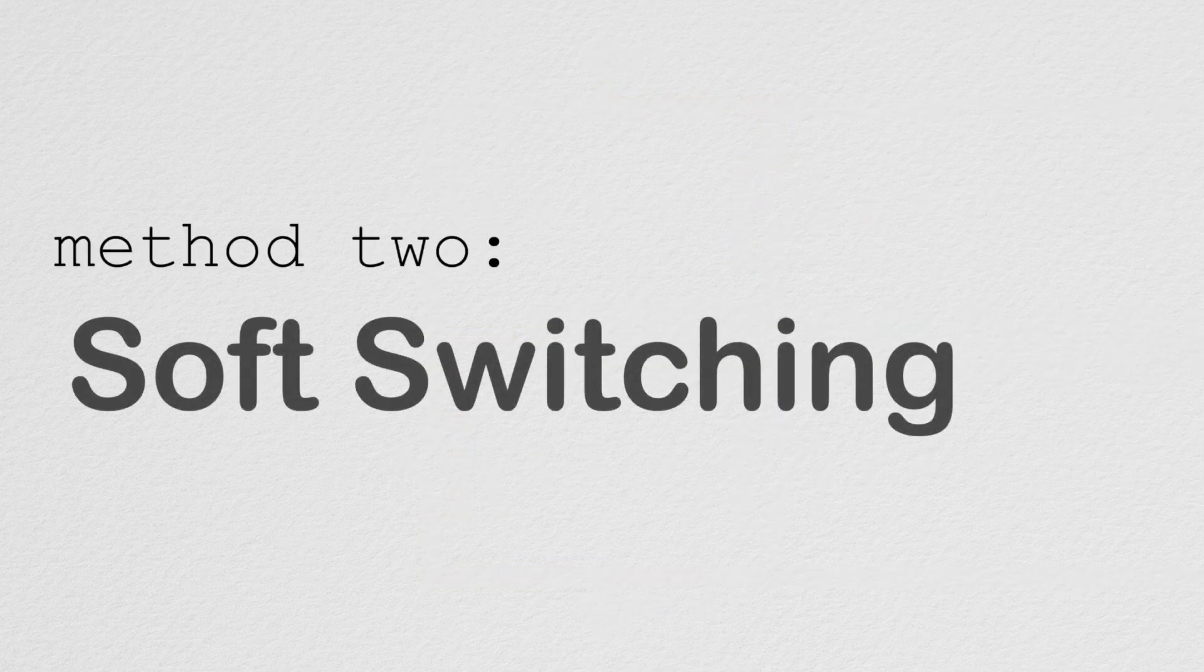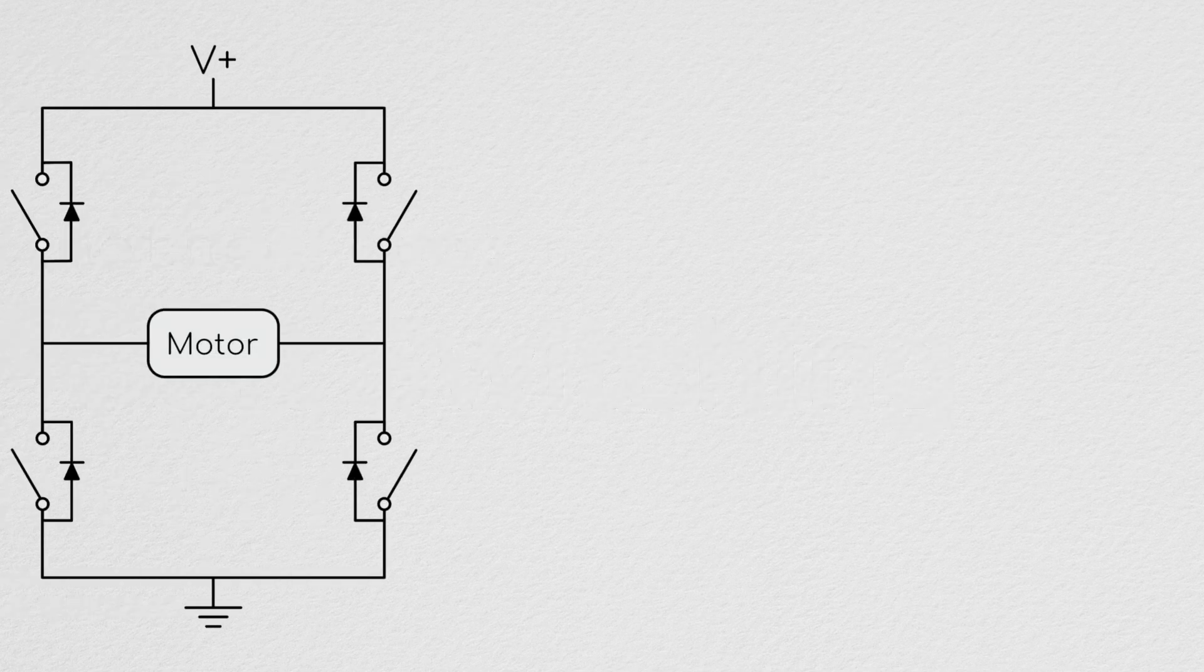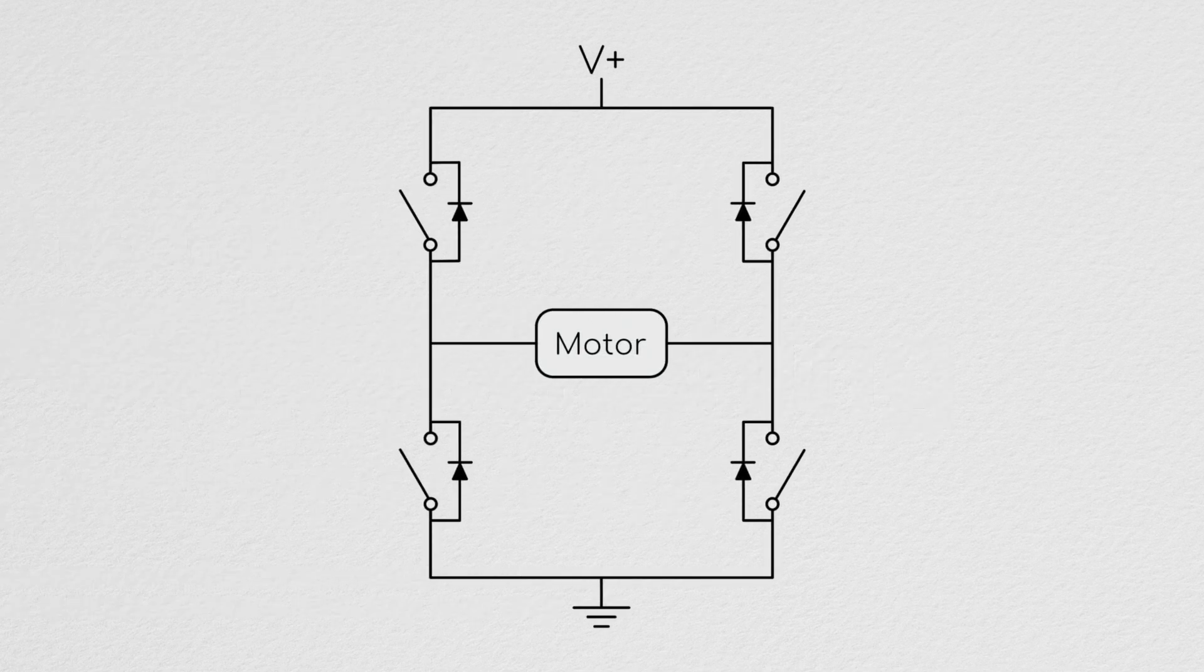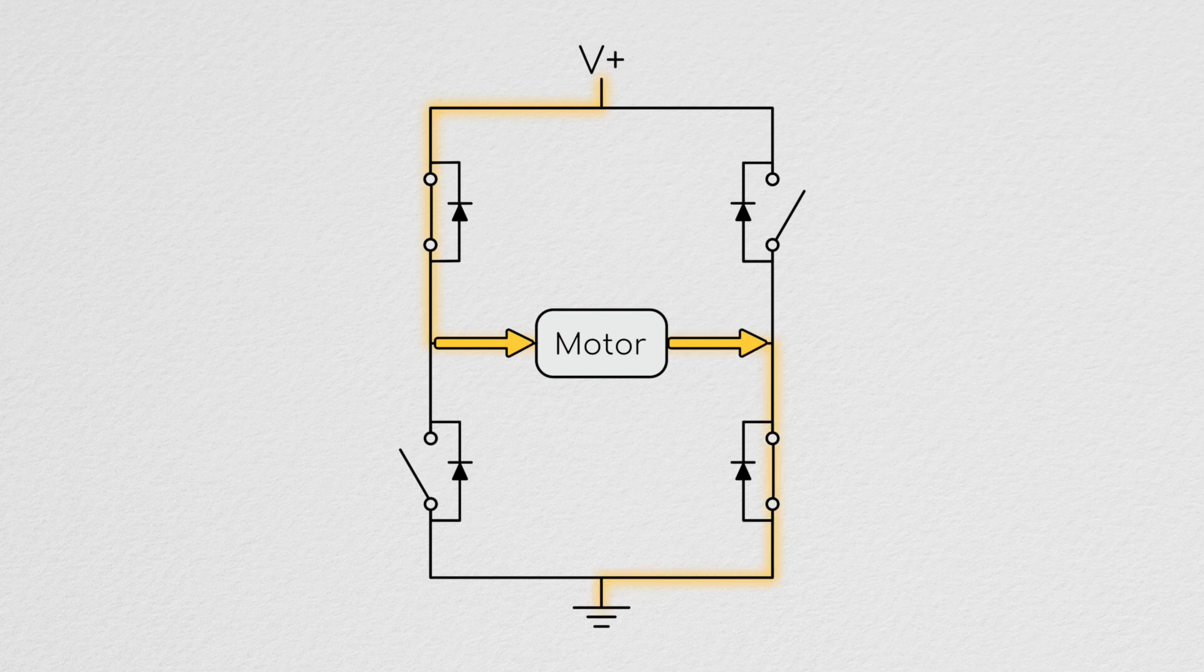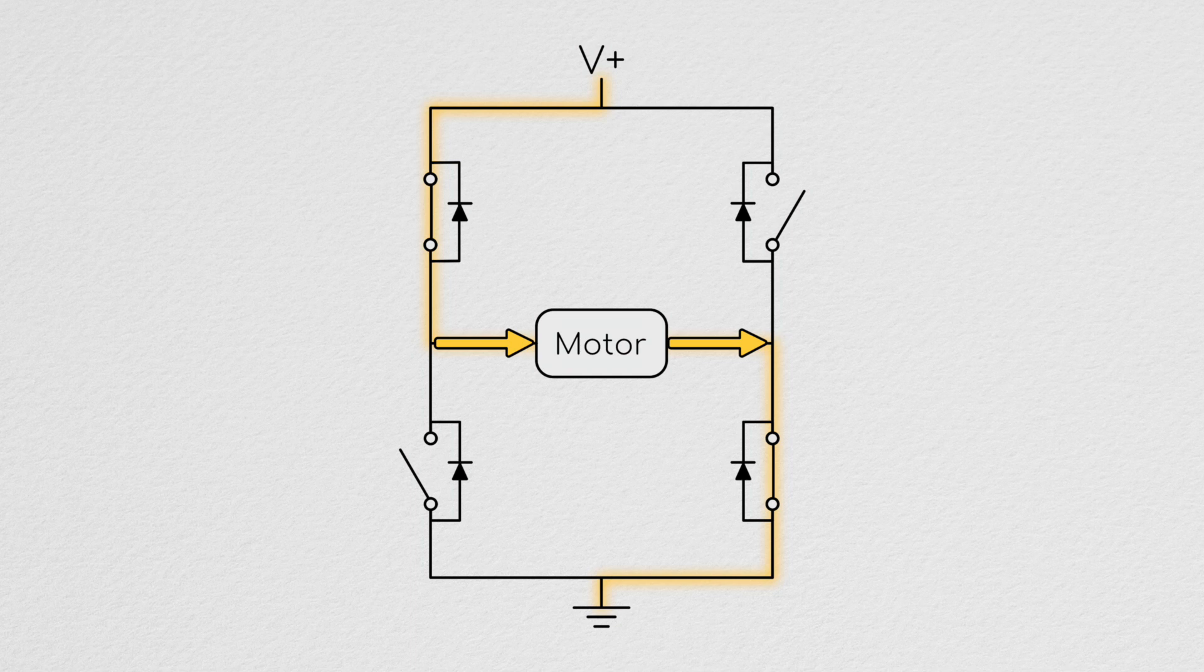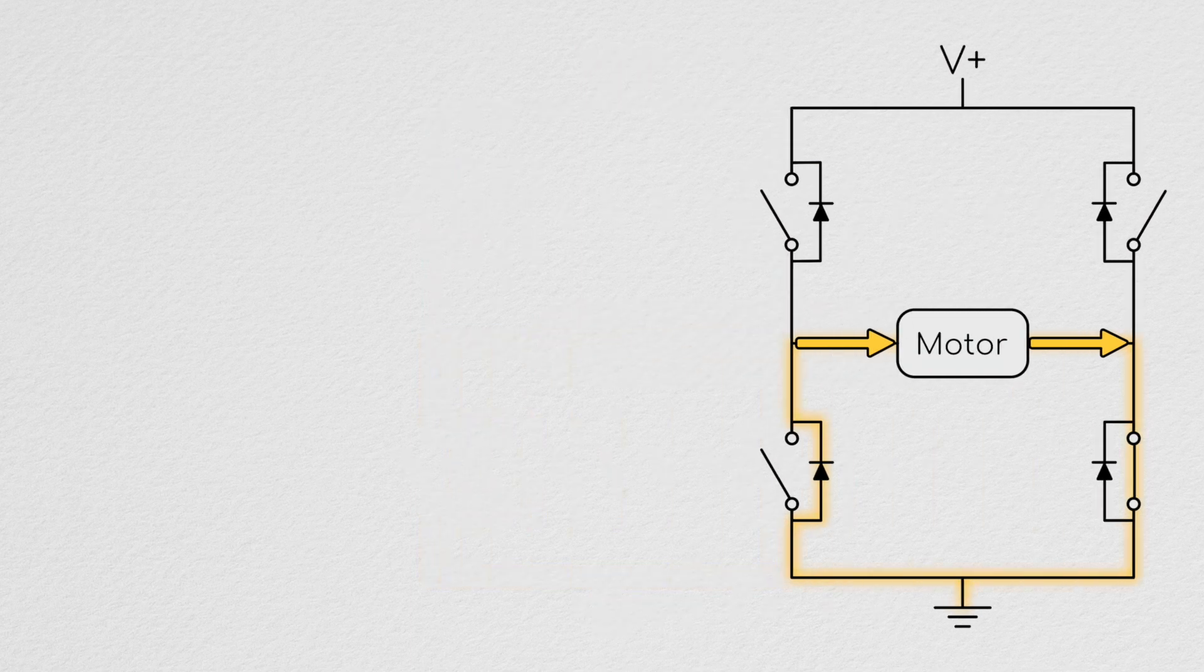Method two: soft switching. During the forced phase of soft switching, just like in hard switching, the left high side and right low side MOSFETs will be closed. Unlike in hard switching, however, during soft switching in the unforced phase only the left high side MOSFET will be opened. Thus the current which is forced to continue flowing due to the inductance of the motor will flow up from ground through the left low side diode, through the motor, then back to ground via the right low side MOSFET.